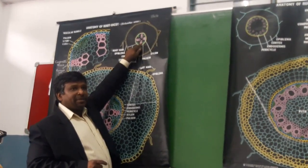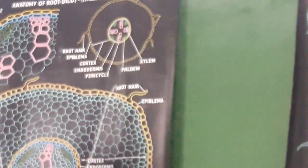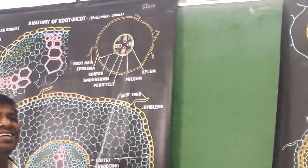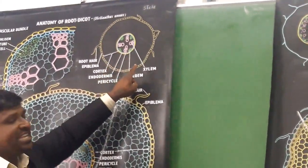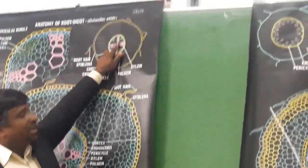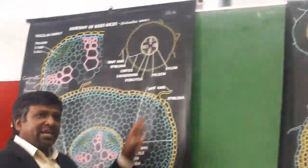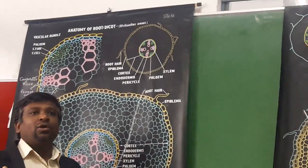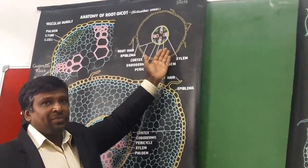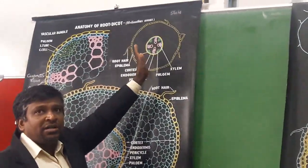Xylem is present in separate radii, and phloem is present in separate radii — this condition is called a radial vascular bundle. They have four patches of xylem and four patches of phloem, which is the tetrarch condition. They are exarch (E-X-A-R-C-H) because proto-xylem is towards the endodermis and meta-xylem is towards the pith. In this example of Helianthus, it is tetrarch, but some dicots may also have six patches of xylem and six patches of phloem. This is the ground plan of the dicot root.